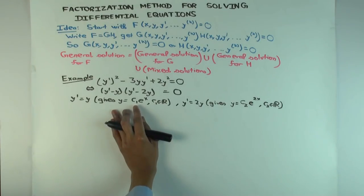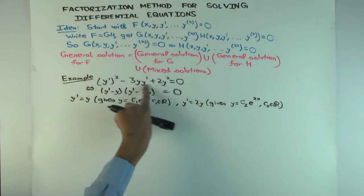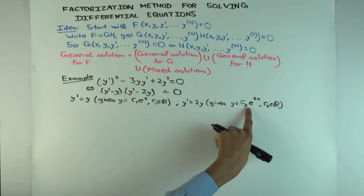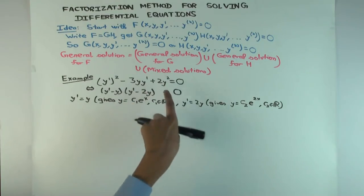So we have two solution families here. One solution family is multiples of e to the x. So each value of c₁ will give a particular solution for this and hence also for the original equation. Then you have another family which is multiples of e to the 2x. Each value of c₂ will give one solution for this equation and hence also for the original equation.